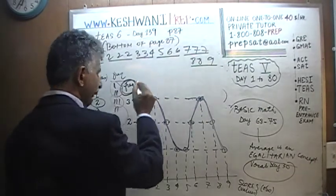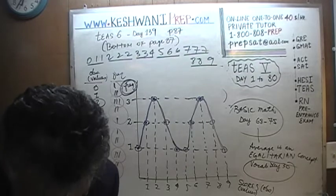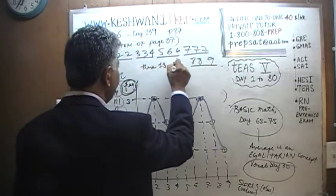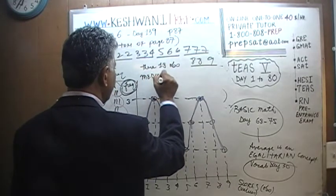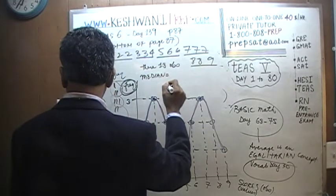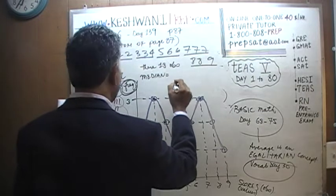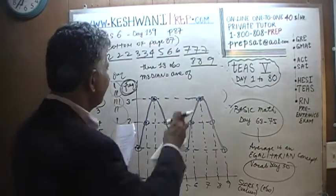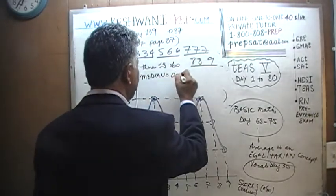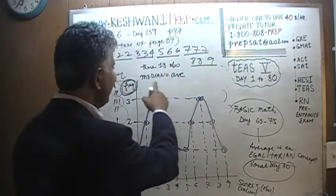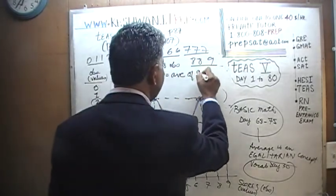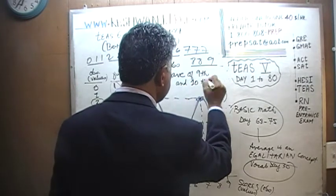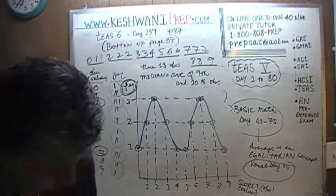Since we have an even number of observations — 18 — the median is going to be the average of the 9th and the 10th observation. Why the 9th and the 10th? Let's find out.